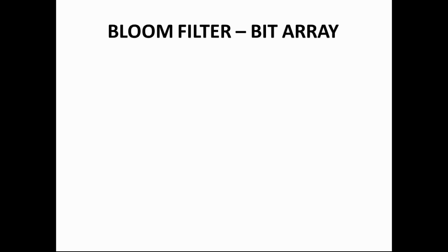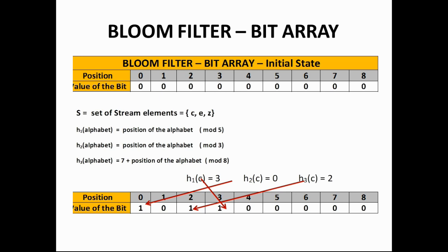Let us look at a bit array example. Consider a bit array of 9 positions. Initially, all position values are 0. Consider a set of 3 stream elements: c, e, z. We define two hash functions: h1(alphabet) = position of the alphabet mod 5, and h2(alphabet) = position of the alphabet mod 3.